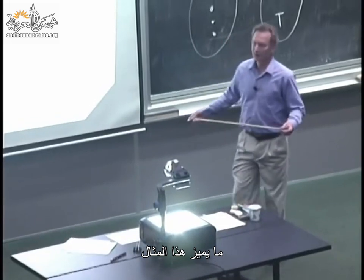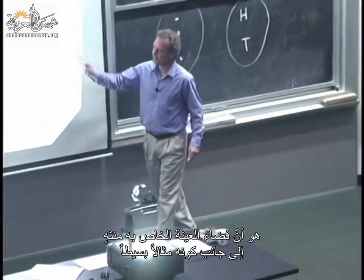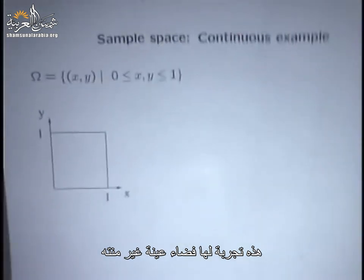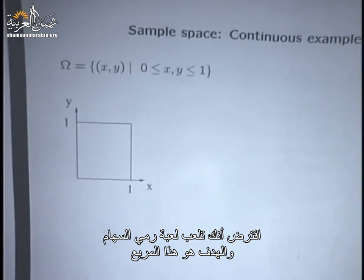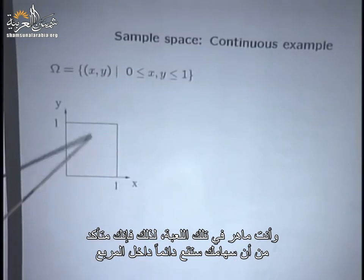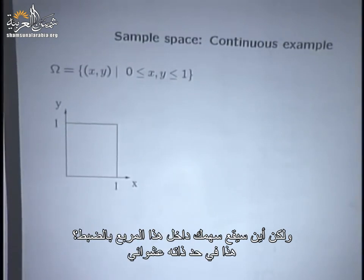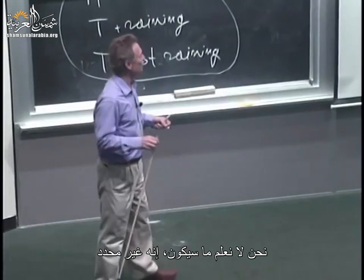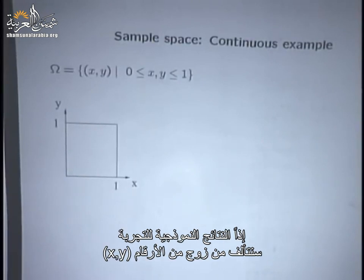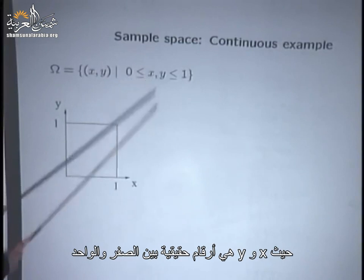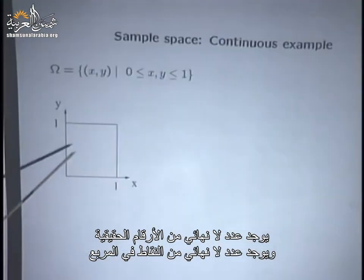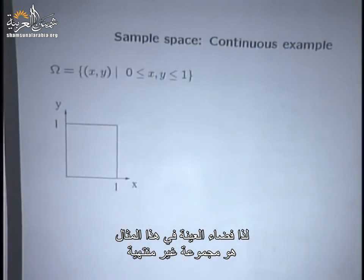Not every experiment has a finite sample space. Here's one where the sample space is infinite: you're playing darts and the target is a square, and you're so perfect that your dart always falls inside the square — but where exactly it falls is random. All the possible points inside the square are possible outcomes. A typical outcome is a pair (x, y) where x and y are real numbers between 0 and 1. There are infinitely many real numbers and infinitely many points in the square, so this is an example with an infinite sample space.